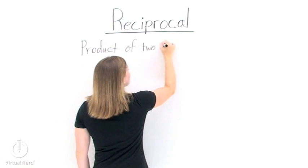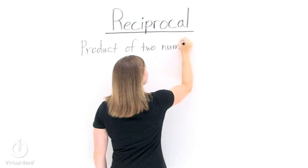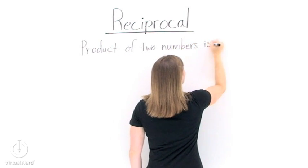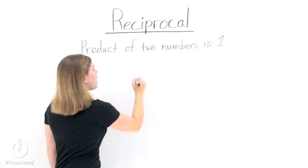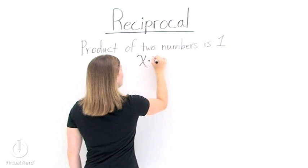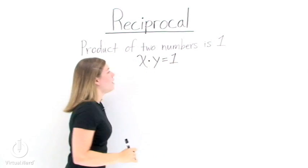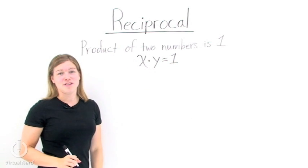In other words, if we take the product of two numbers and that product is 1, then each of those numbers is a reciprocal of the other. So if we have x times y and their product is 1, then x and y are reciprocals of each other.